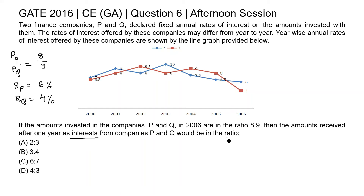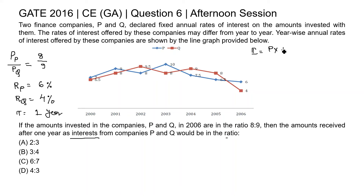Now we need to find the ratio of interest from company P and Q after one year. Time is one year for both. We know the interest can be found by the formula: Principal × Time × Rate of Interest / 100.